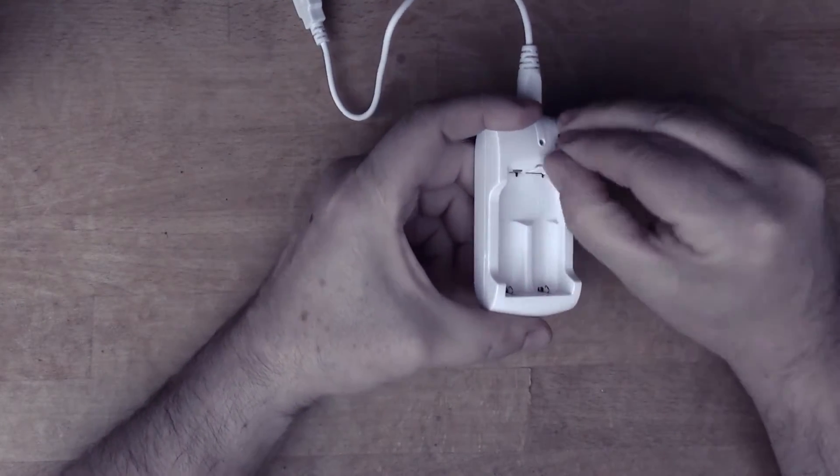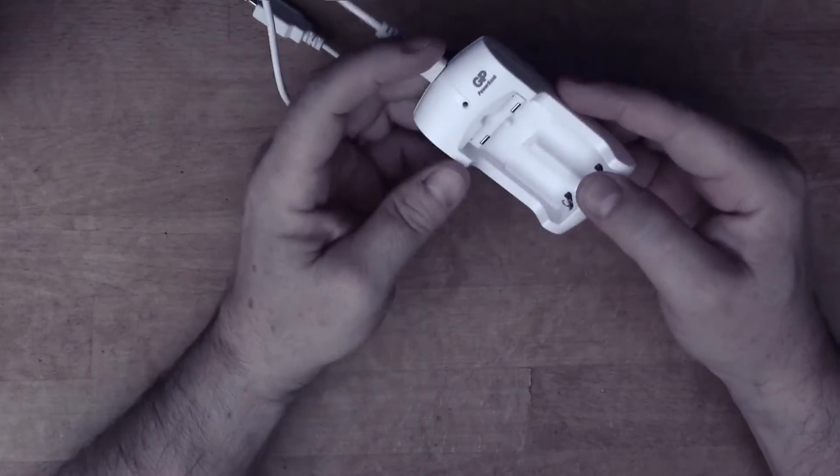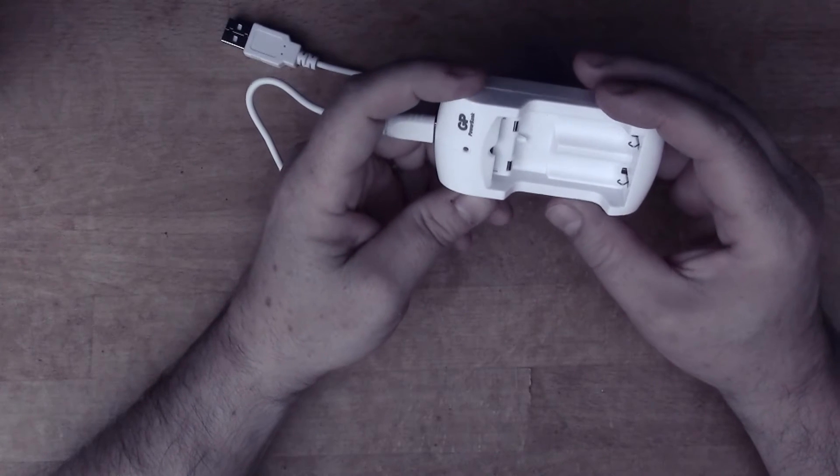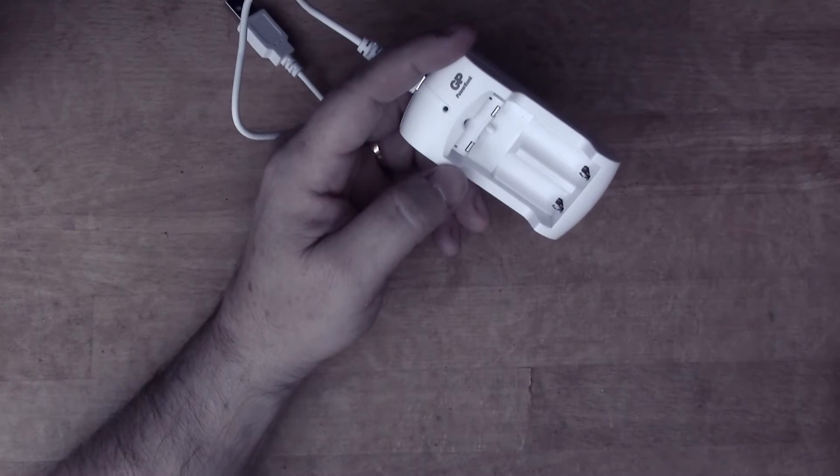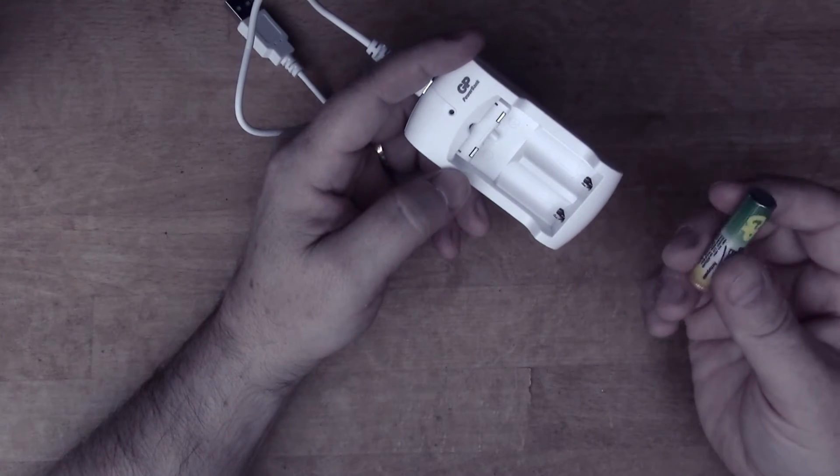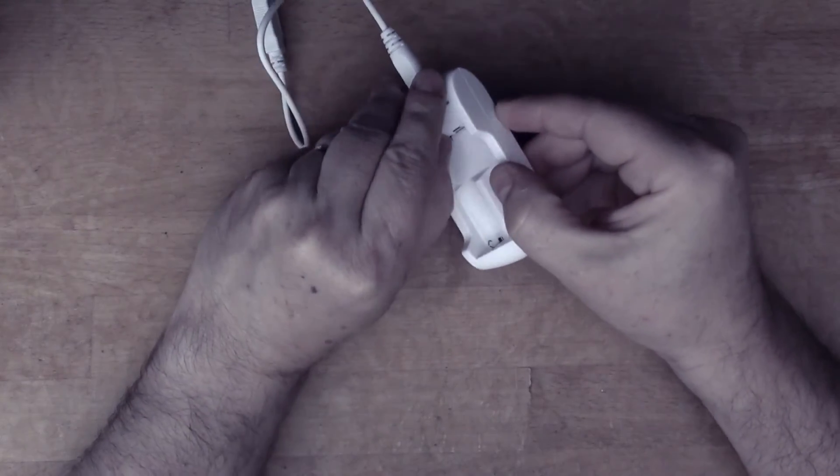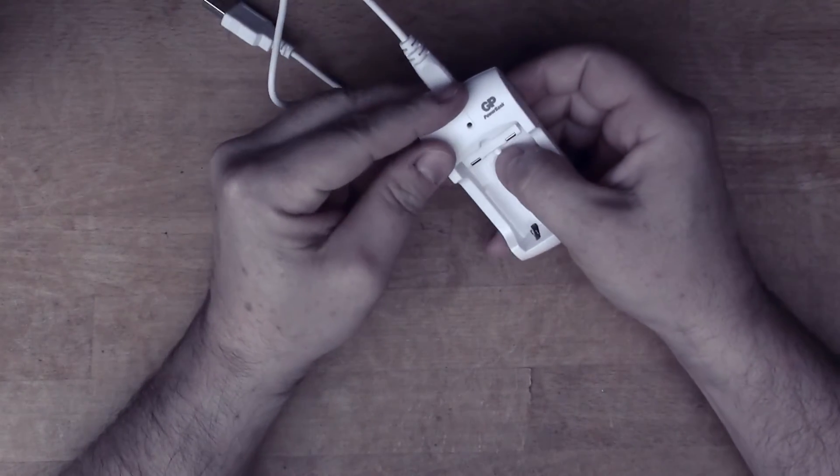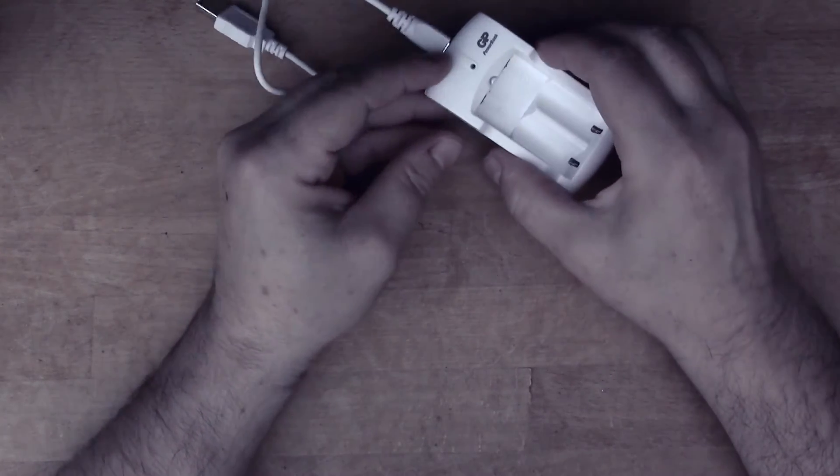there's a switching mechanism so that when it's down in this position, the charger is actually providing less current into the cells because these AAAs have got less capacity than the AAs. So this actually is not just a little adjuster, but it also changes the current setting in the device.